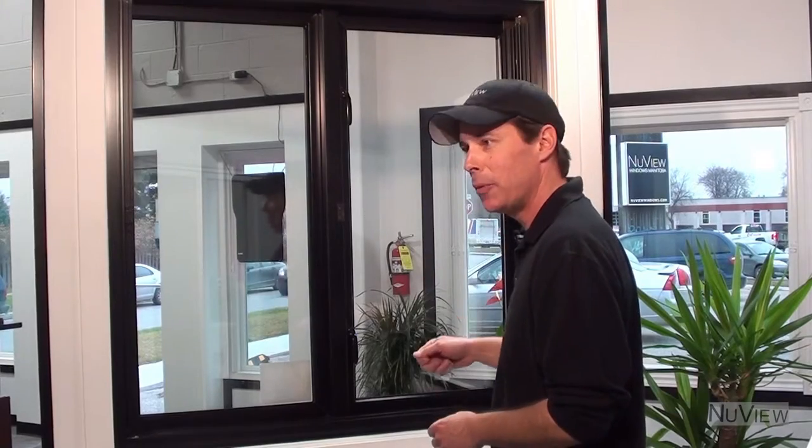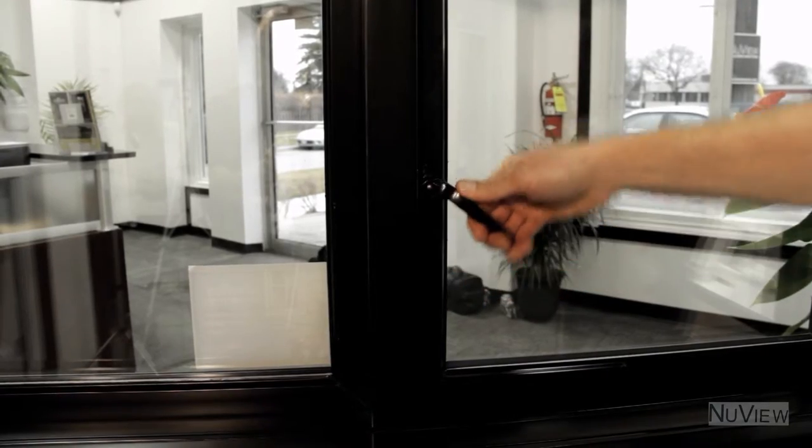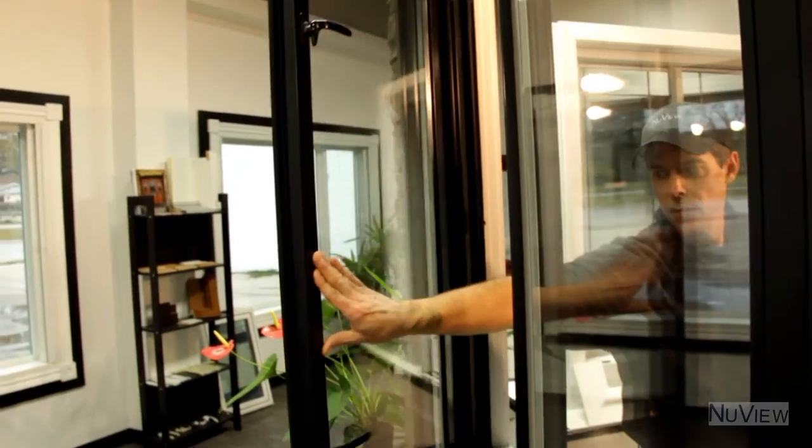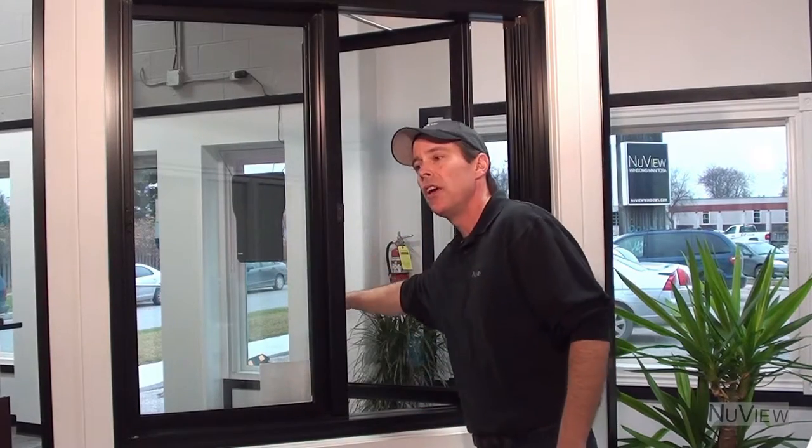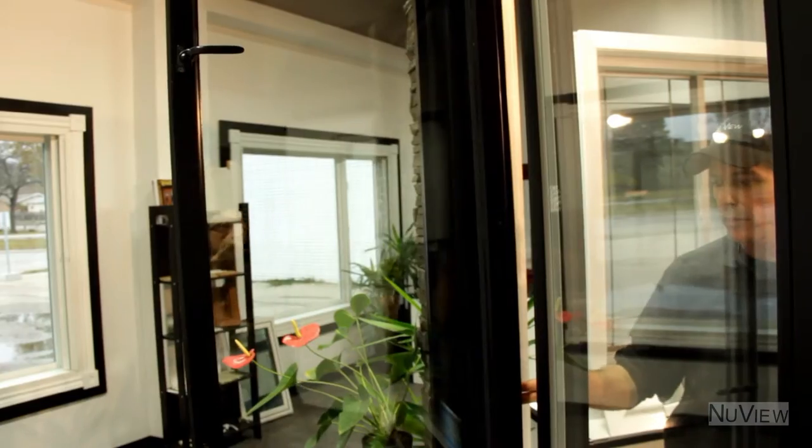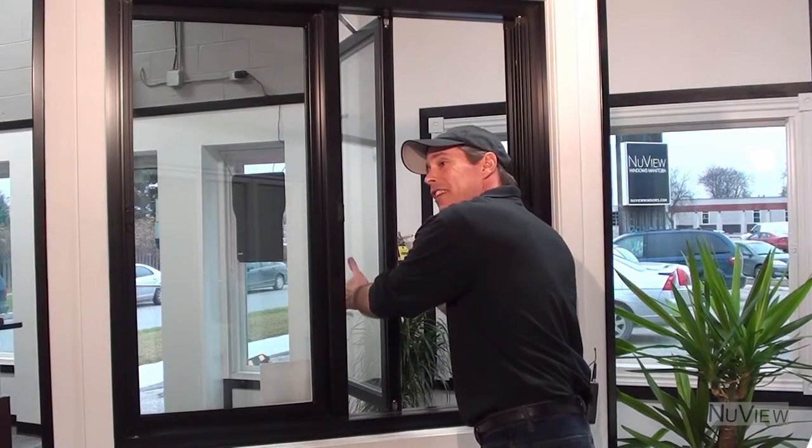First thing that everybody notices about a NuView window is there's no crank to open them up. All you do is simply unlock the window, push it open, and wherever it stops, that's where it locks in place. You can open it to 90 degrees if you want as well, so you have nice easy cleaning from inside the house and great ventilation.